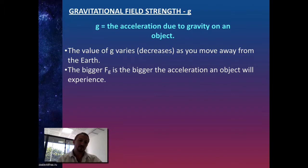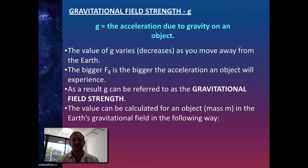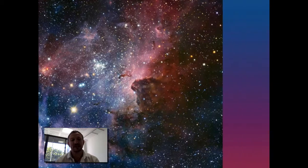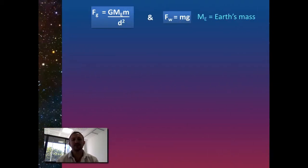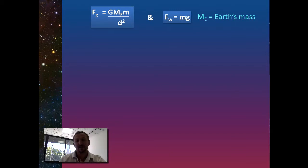The further out we go beyond the atmosphere, g is going to decrease — that's why you almost feel weightless in space, and as a result we decrease our field strength. This value can be calculated if we know the mass of the object in relation to the gravitational field. We know that Fg equals GMₑm, where Mₑ is the mass of the Earth and m is the mass of the object, all over d squared — the inverse square law with respect to distance. That distance incorporates the radius of the Earth.